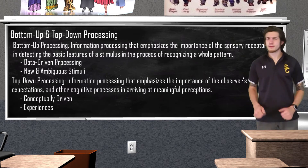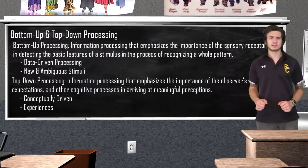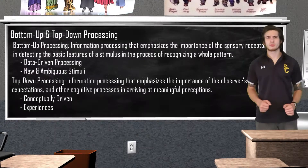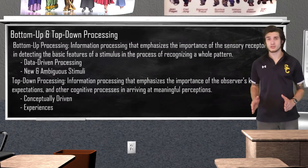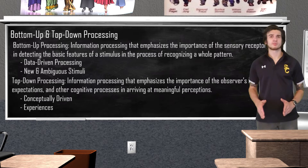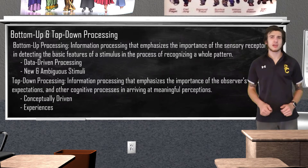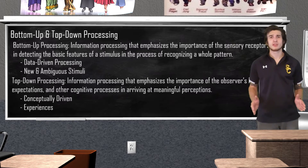To explain this type of processing, I am going to bring back our bottom-up processing example, but this time I am going to add some context. Looking at our shape now, what do you see? Do you see the letter B? Now let's change it up a bit — what do you see now? Do you see the number 13? As you can see, your thought process or cognition was affected by the context provided with the stimulus. This is top-down processing, because your prior knowledge and experience of letters and numbers influenced your perception of the shape.